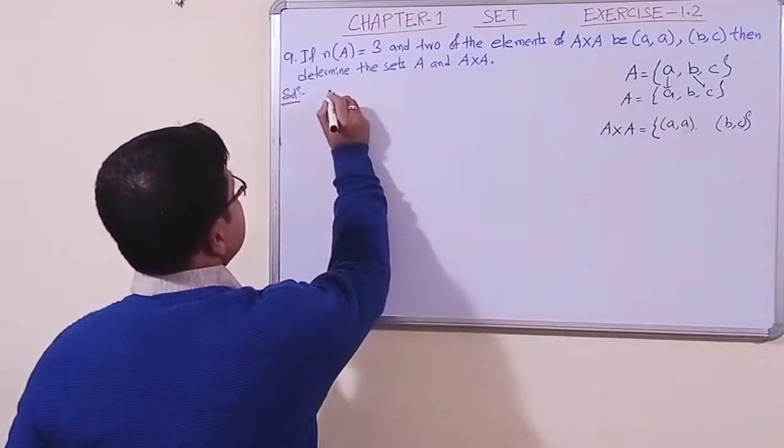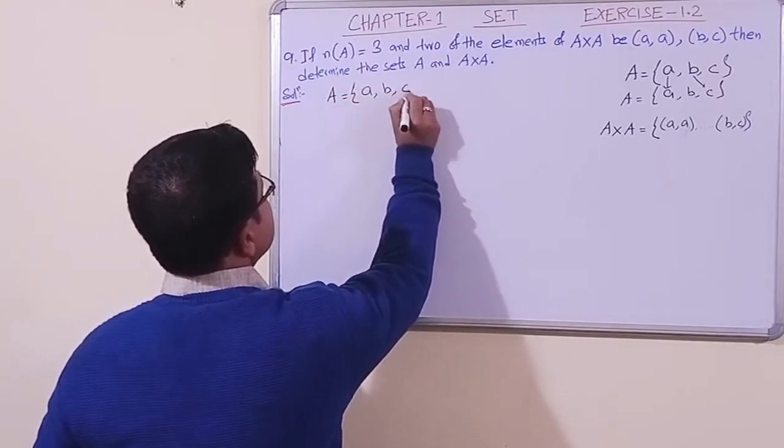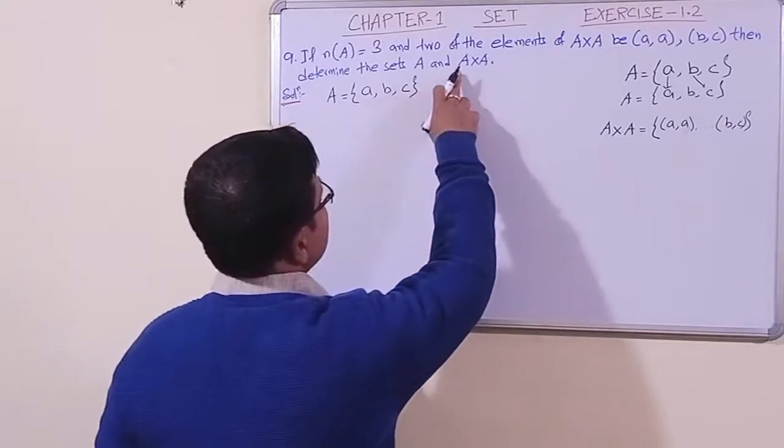...this set having elements a, b, and c. If it is so, then again we have to find what is A cross A.